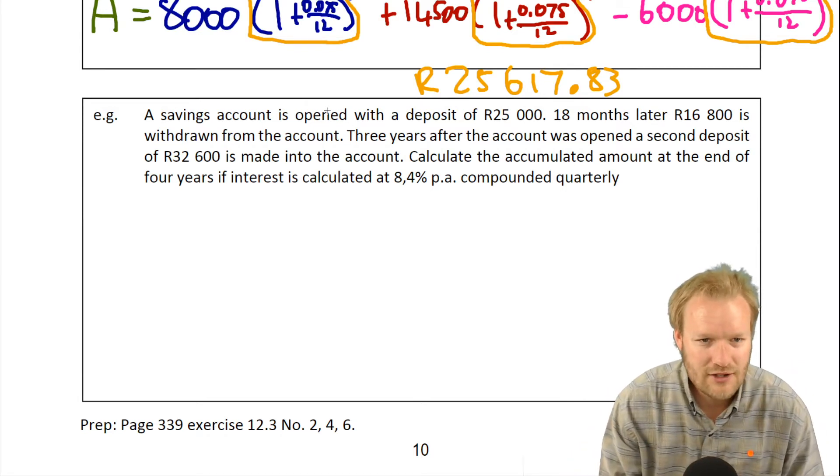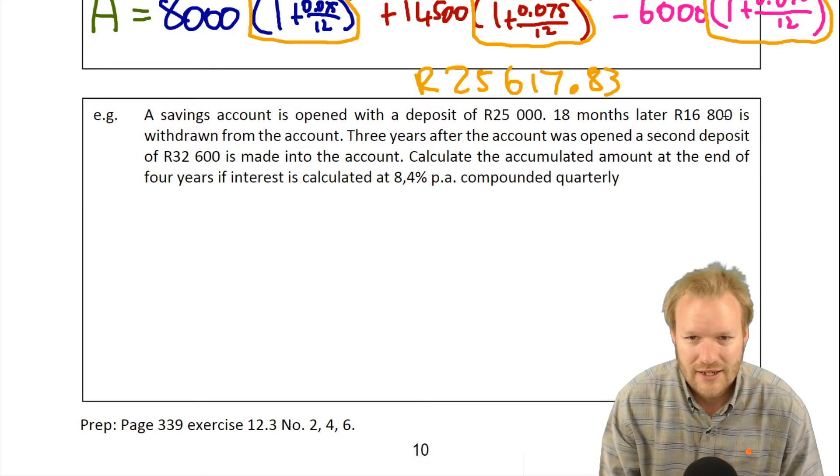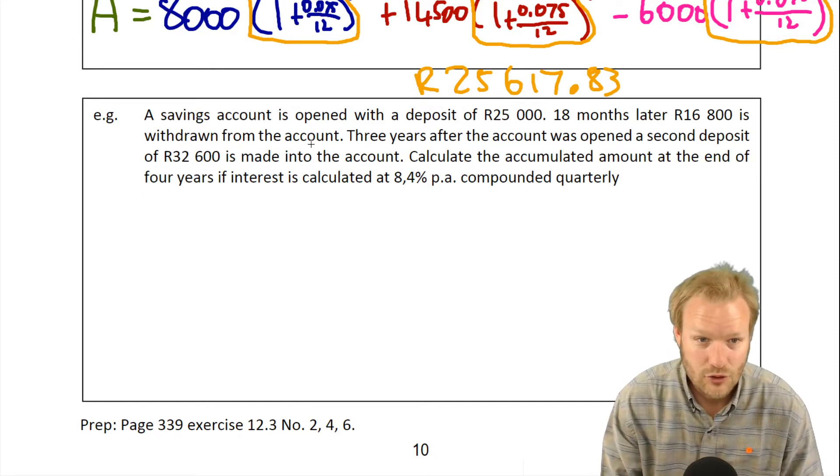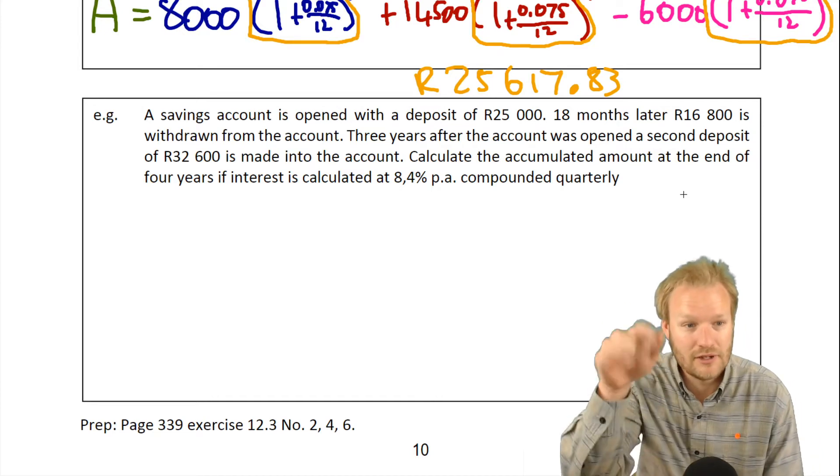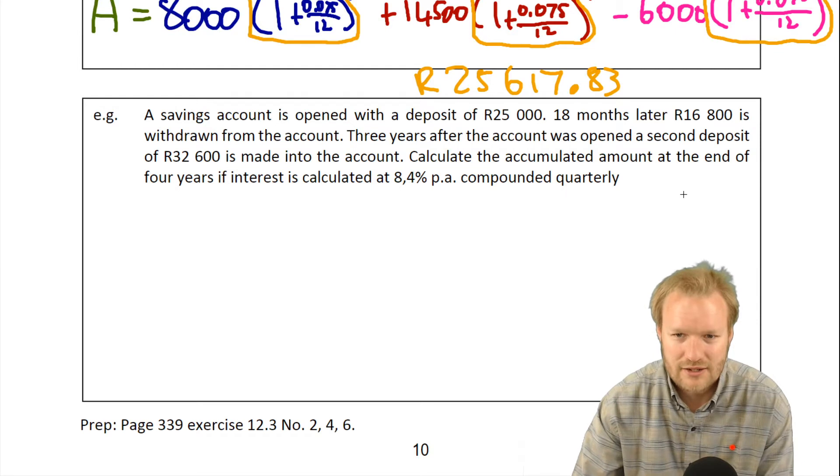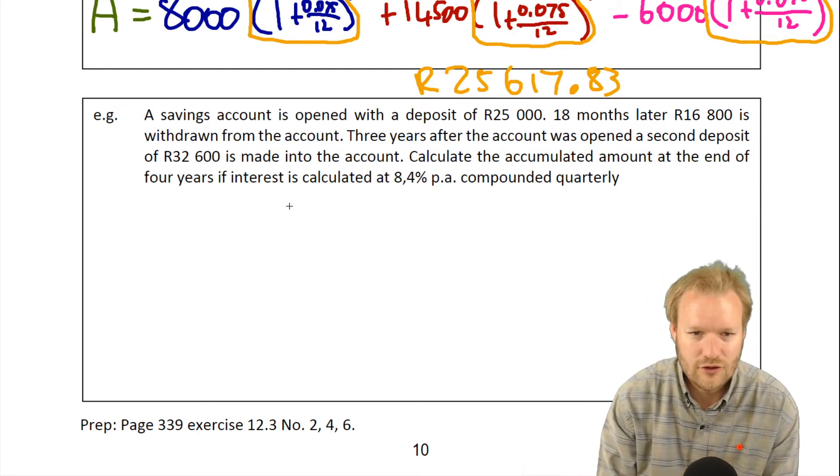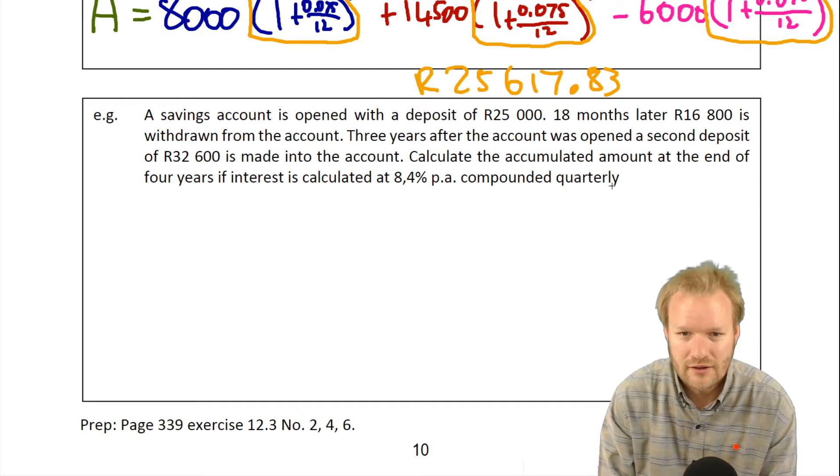A savings account is opened with a deposit of 25,000 rand. 18 months later, some money is withdrawn. Three years after the account was opened, a second deposit is made into the account. Calculate the accumulated amount at the end of four years if interest is calculated at 8.4% per annum compounded quarterly.